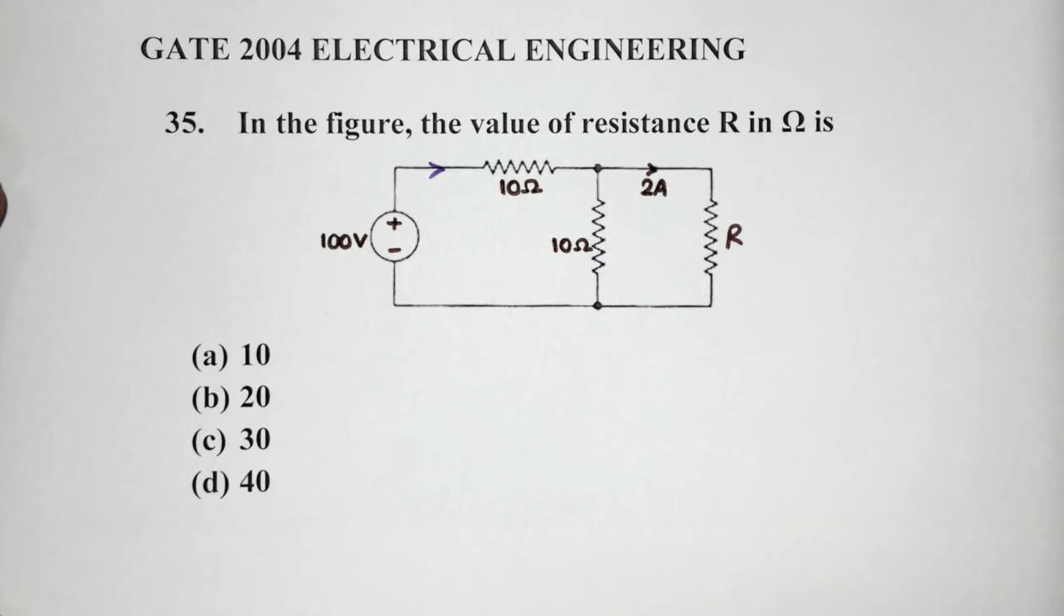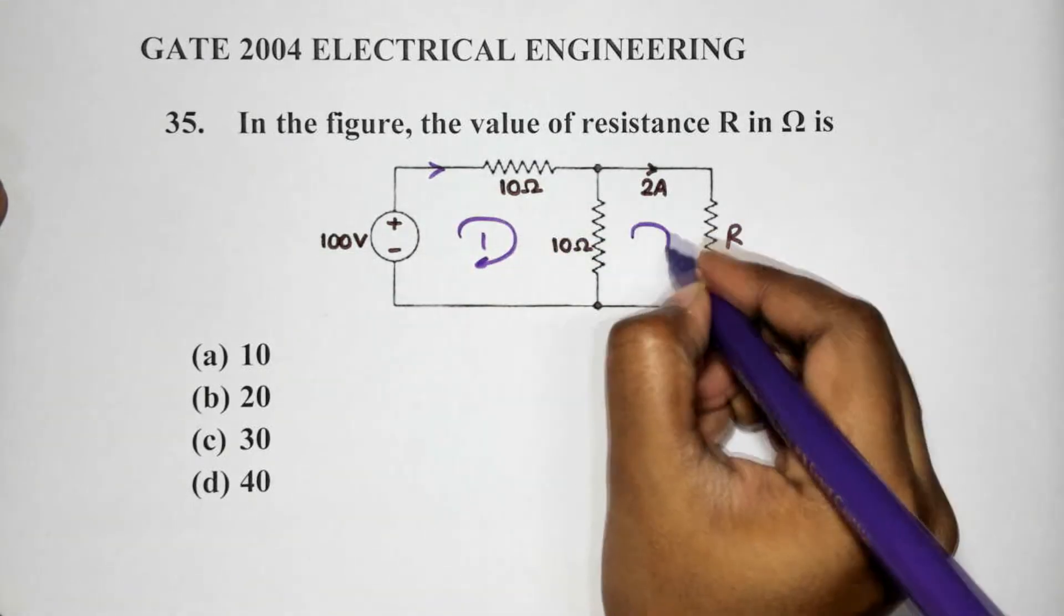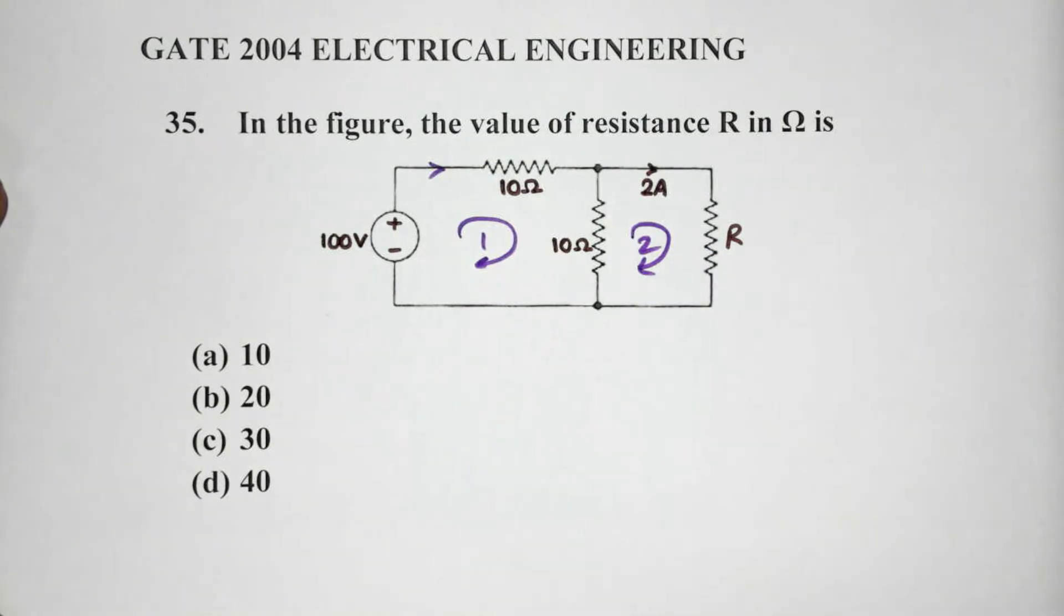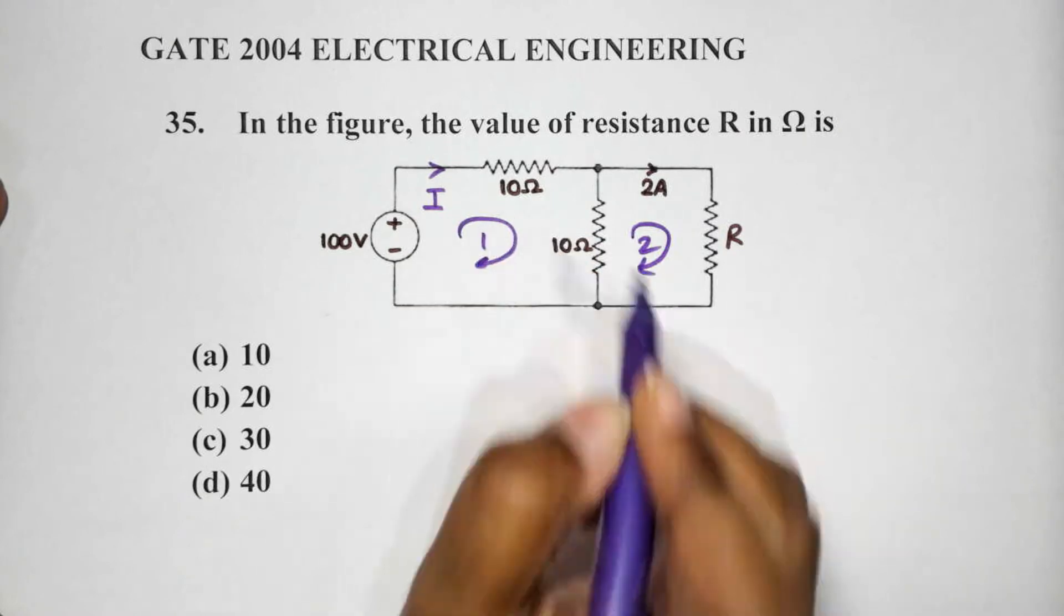Now, in order to find the value of R, we need to consider both the loops in this figure. Let's call this loop 1 and we'll call this loop 2.